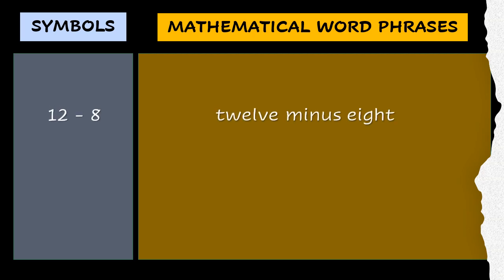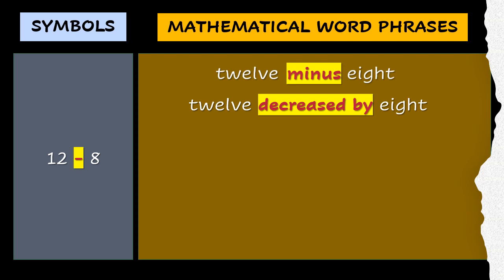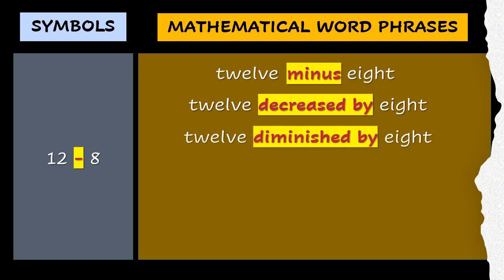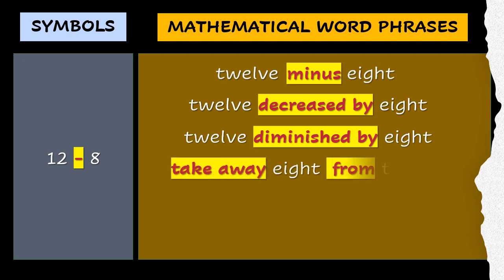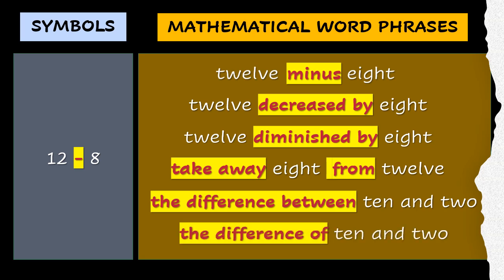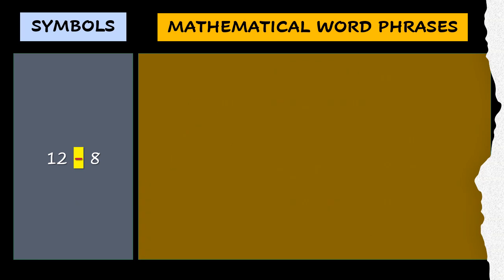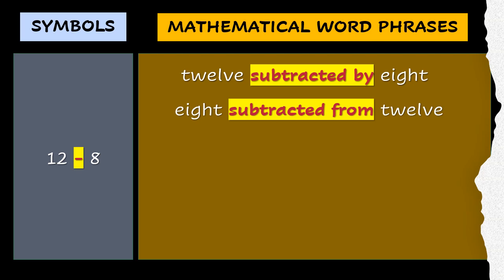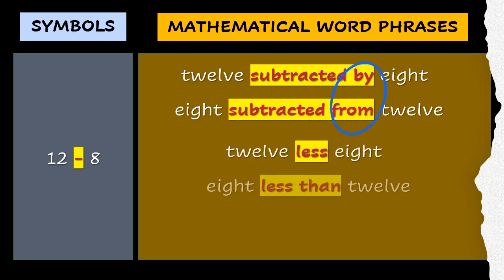Let's have subtraction. The minus sign can be read as decreased by or diminished by. Take away from is a signal phrase for subtraction, but the numbers are switched. The difference between and the difference of are two phrases that usually require enclosing the numbers within a pair of grouping symbols. The phrase subtracted by and subtracted from differs in how the numbers are written. The order of these numbers depends on the word that comes after subtracted. The same can be observed with less and less than. The numbers are switched as an effect of the word than.